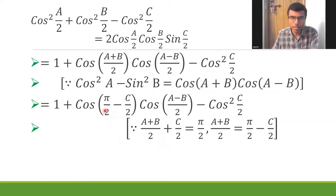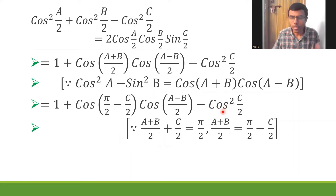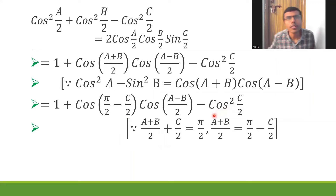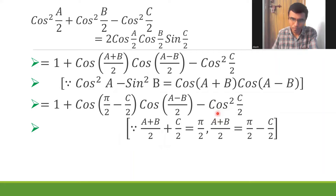So this term becomes sin(c/2)·cos((a-b)/2). Now I also know I'm going to get something involving sin(c/2), so I want to convert cos²(c/2) into a form involving sin(c/2). cos²(c/2) = 1 - sin²(c/2).